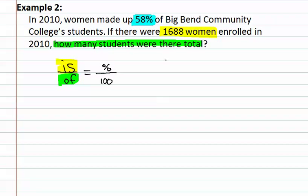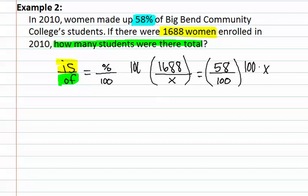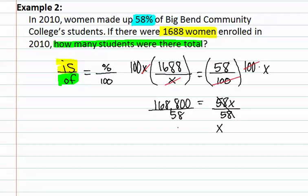We can now set up our proportion. We have 1,688 over some unknown amount, and we know that this equals 58 out of 100. We can now begin to solve by multiplying both sides by the LCD or the product of the denominators. After reducing, we have cleared the fractions. This results in 168,800 equals 58x. We divide both sides by 58 to get x alone, leaving us with 2,910.34 students. Since we do not have 0.34 of a student, we round to 2,910 students.